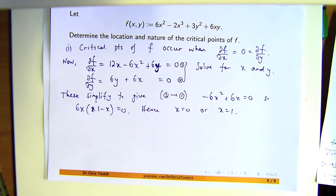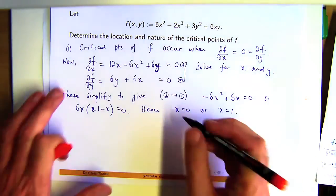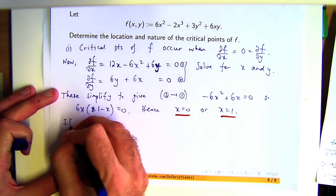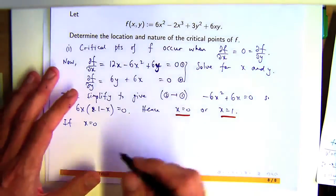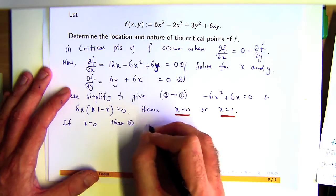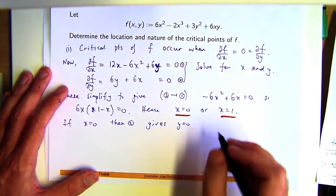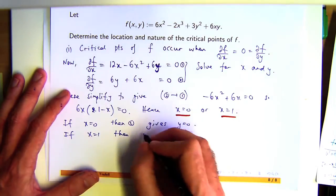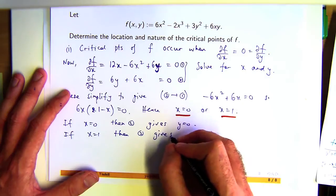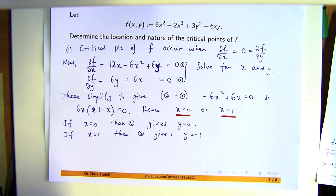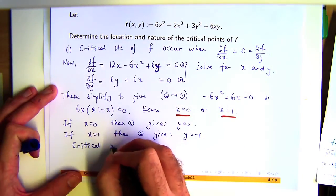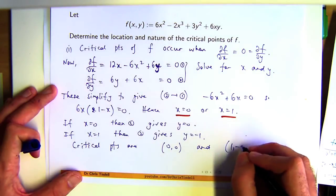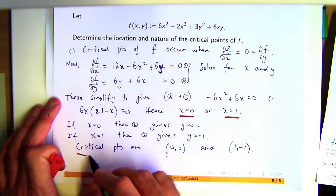So what I need to do now is go back and find the corresponding y points for those, or y values for those x values. So if x equals 0, then equation 2 gives y equals 0. If x equals 1, then equation 2 gives y equals negative 1. So we now have our points, our critical points are at the origin and at the point (1, -1). So that's the first part of this problem done.